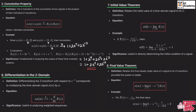The next property is the initial value theorem. It states that x(0) = lim(z→∞) X(z). This is helpful in analyzing the initial condition of a signal. For example, if X(z) = (1 + z⁻¹) / (1 − 0.5z⁻¹), applying the limit as z tends to infinity, the z⁻¹ terms tend to 0, giving x(0) = 1.